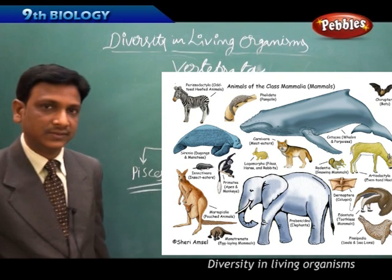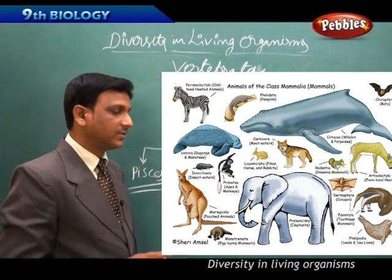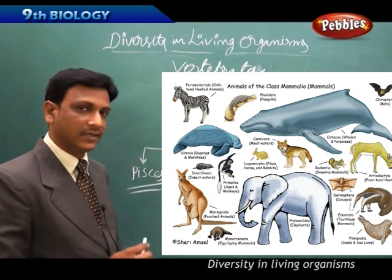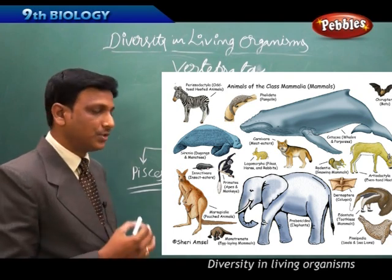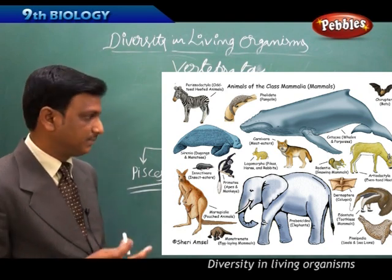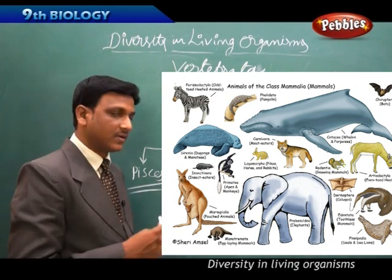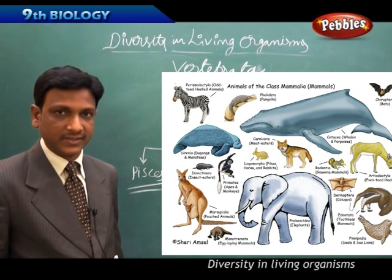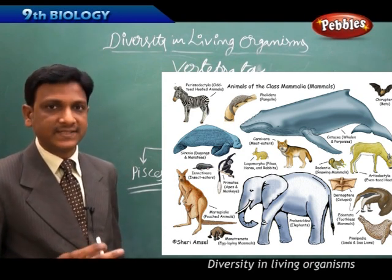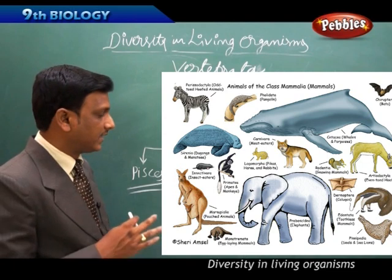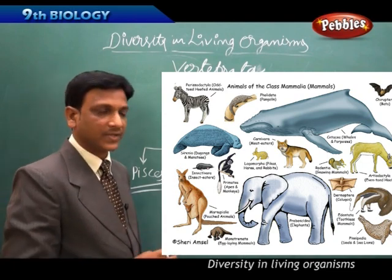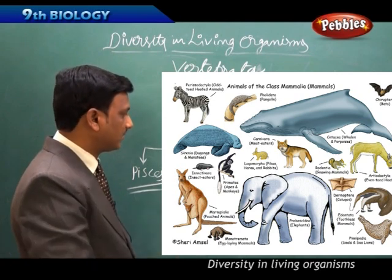Mammals are vertebrates that give birth to young ones and feed them with milk. Examples include humans, cows, buffaloes, goats, dogs, sheep, and cats. Mammals are warm-blooded — they have a constant, fixed body temperature.